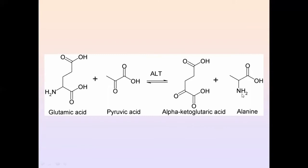So pyruvate receives the amino group from glutamate and becomes alanine. Glutamate loses its amino group and becomes alpha-ketoglutaric acid, which contains two carboxyl groups and is also an intermediate of the Krebs cycle. This is how alanine is formed: through transamination, with pyruvate already present from glucose metabolism receiving the amino group from glutamate to become alanine.